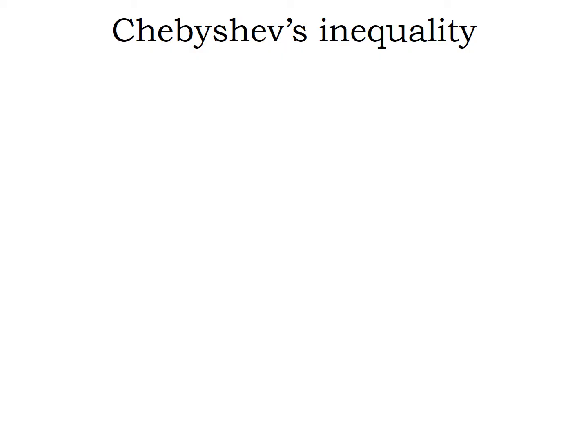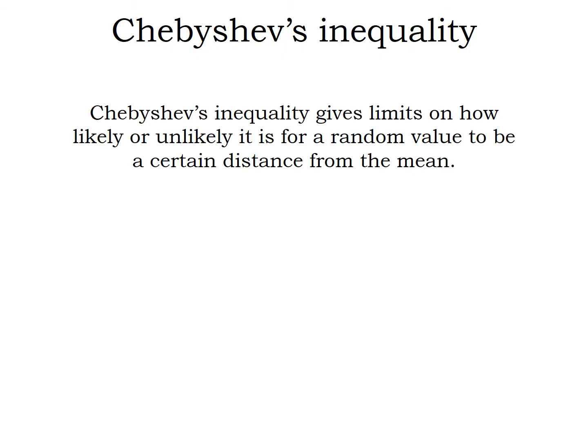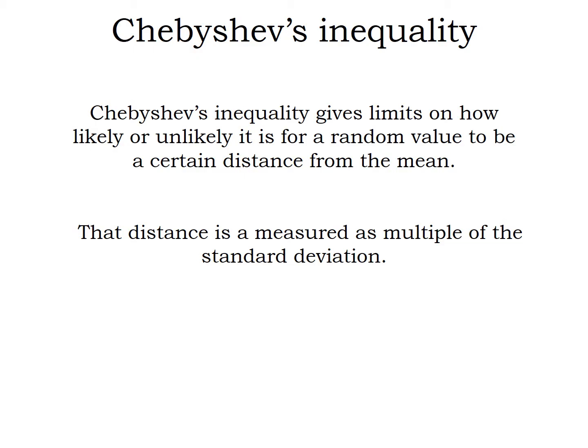Today I'm going to talk to you about Chebyshev's inequality. Chebyshev's inequality gives us limits on how likely or unlikely it is for a random value selected from a population to be a certain distance from the mean. We're going to measure that distance as a multiple of the standard deviation. Recall that the standard deviation tells us how far on average numbers are from the mean. So two standard deviations would make a number twice as far off center as the values typically are in that population.